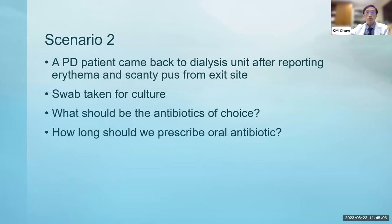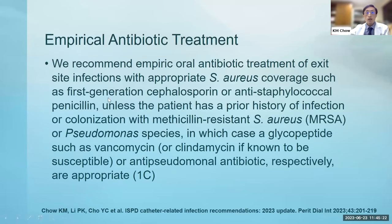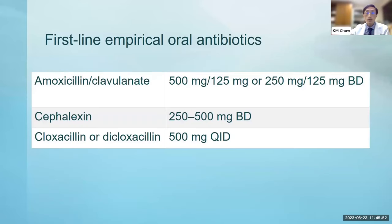Moving on to scenario two: a patient came back to the dialysis unit reporting erythema and discharge from the exit site. A swab was sent for culture. What should be the antibiotic of choice, and how long should we prescribe antibiotics? In 2017, empirical antibiotics were recommended to cover Staphylococcus aureus — usually a first-generation cephalosporin or an anti-staphylococcal penicillin — unless the patient has a recent history of MRSA or Pseudomonas, in which case you may need to modify the antibiotics.